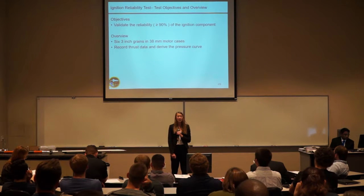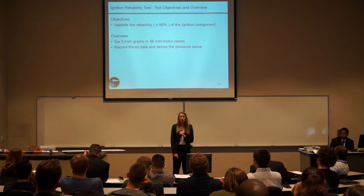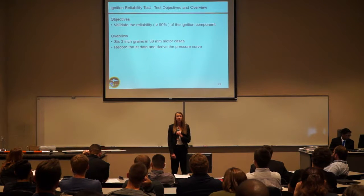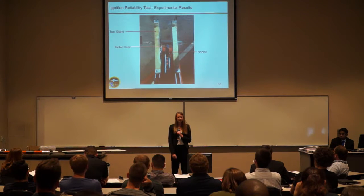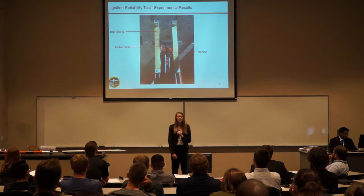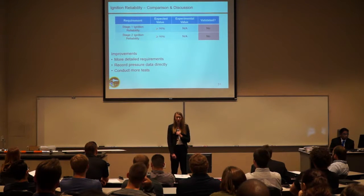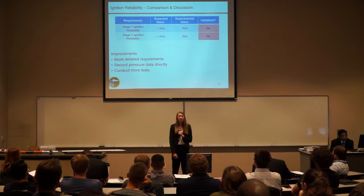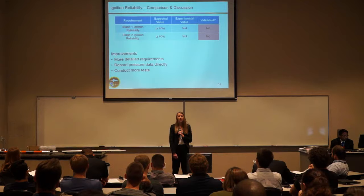The ignition reliability test objective was to validate reliability greater than 90%, using six three-inch motors with a half-inch bore diameter and recording thrust data to derive pressure. The experimental setup used the tested motor case and nozzle — the same test that was to be completed with the propulsion validation, which we were unable to do due to safety and fire concerns. Since we were unable to test, we could not experimentally validate the ignition component. From this, we learned we'd like more detailed requirements and to record pressure data directly rather than deriving it from thrust data.